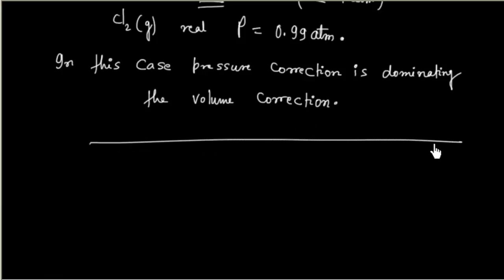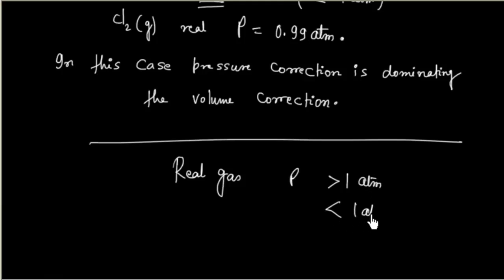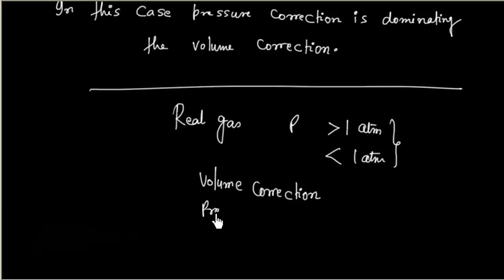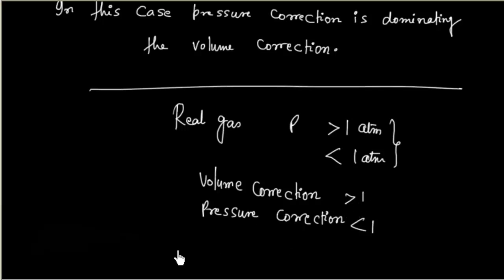This is an important point: whenever we have a real gas, the pressure will be either greater than or less than 1 atmospheric pressure depending on which term dominates — whether the volume correction term dominates or the pressure correction term dominates. If the pressure correction dominates, pressure will be less than 1 atm; if the volume correction dominates, pressure will be greater than 1 atm.